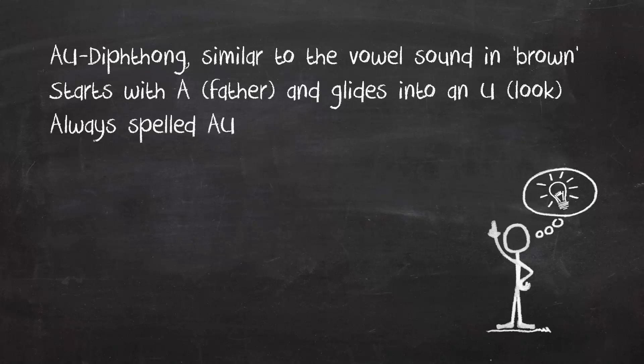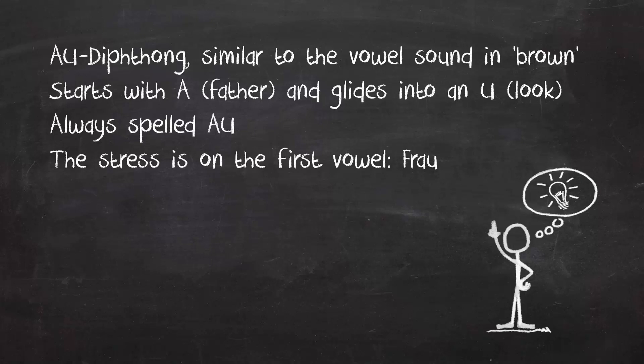The AU diphthong in German is always spelled AU. And as with the EI diphthong, the stress is always on the first vowel. For example, 'Frau' is never pronounced 'Frau' with stress on the second vowel.